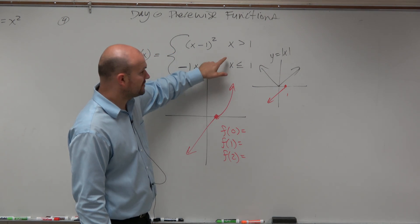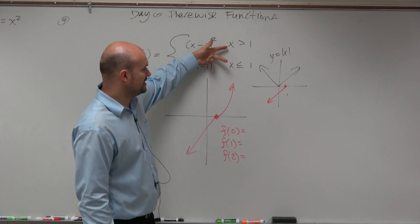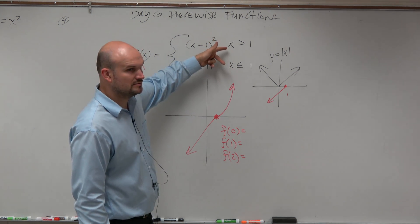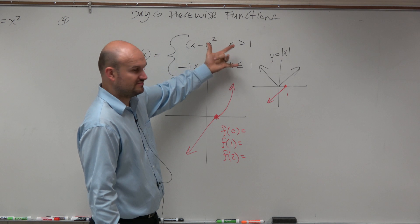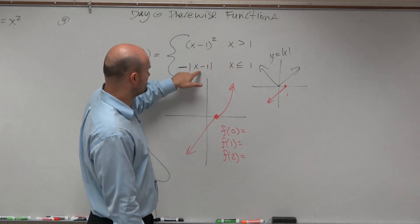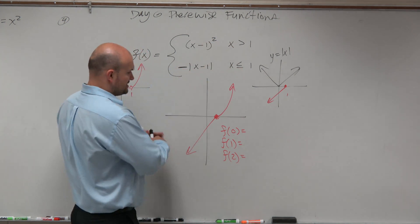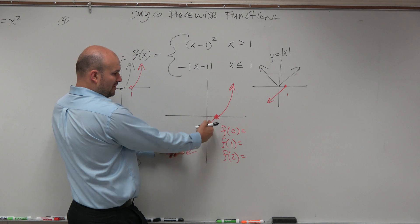If I'm trying to evaluate for f of 0, which function has the domain for 0? You want to look at the domains. Which domain has 0? Bottom one. Which function is that? The negative x minus 1. And does that make sense? Is this graph the one that's at 0?